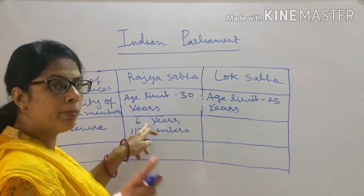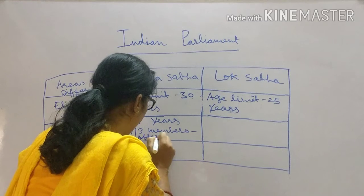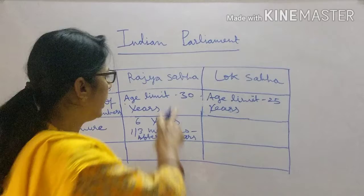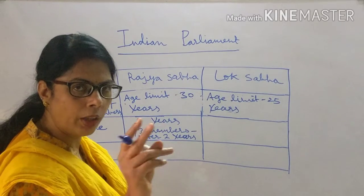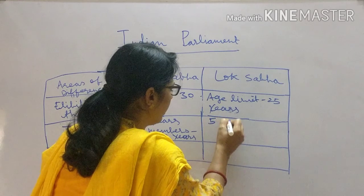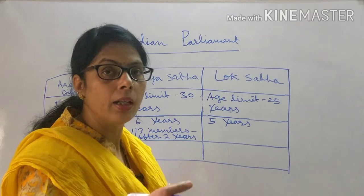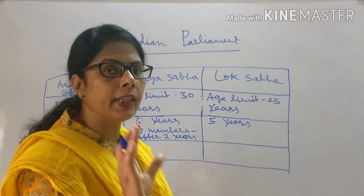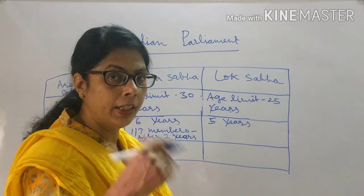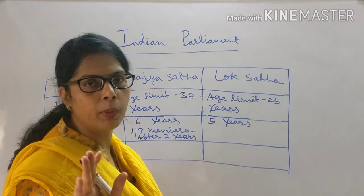Regarding tenure: in Rajya Sabha, each member's tenure is six years, and after every two years one-third of the Rajya Sabha members will retire. This means it is a permanent body and will not dissolve at any time. For Lok Sabha, the tenure is five years, but it is not guaranteed — only if the Lok Sabha maintains its majority will the tenure be five years. If the Lok Sabha dissolves in between, the tenure may be less than five years. Therefore, Lok Sabha is not a permanent body; it is a temporary body.